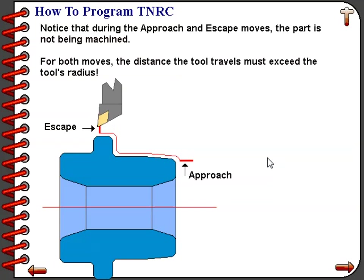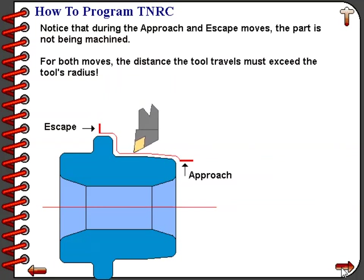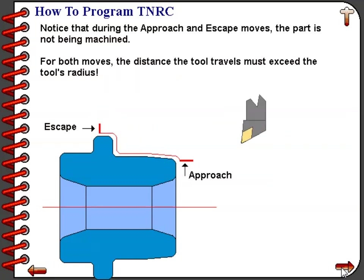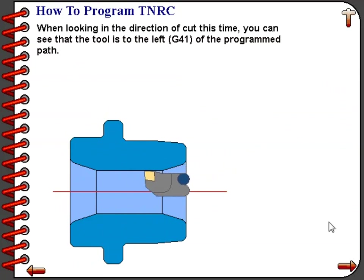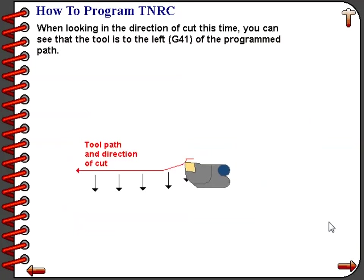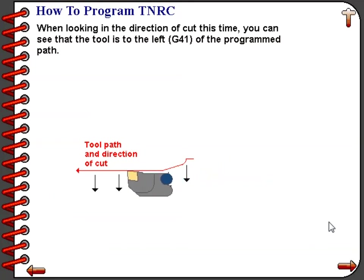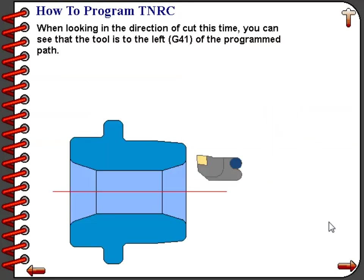Another important aspect of the approach and escape is the distance the tool will travel — it must travel greater than the radius of the insert. On this particular machining operation, we are doing a finish boring operation. We are going to use tool nose radius compensation, but this time we have to turn it on with G41.